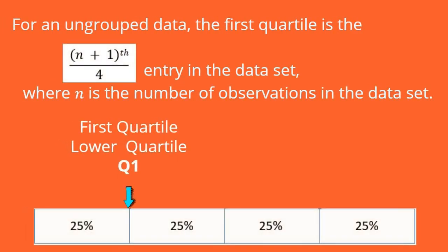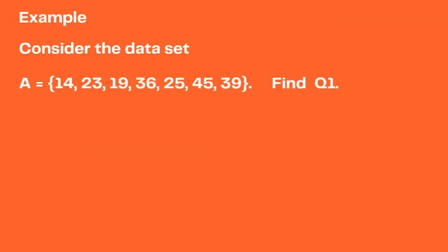For an ungrouped data, we can find the first quartile on the (n plus 1) over 4 entry in the data set, where n is the number of observations. The other term for first quartile is lower quartile or Q1. For example, consider this data set: A = {14, 23, 19, 36, 25, 45, 39}.